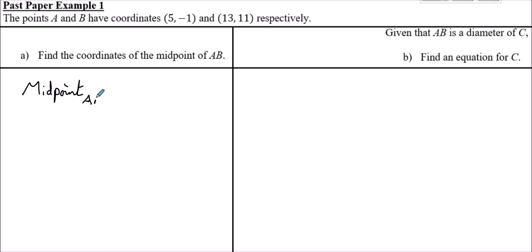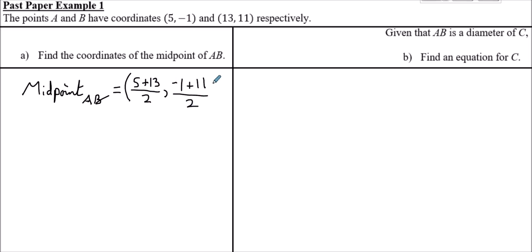The midpoint of A and B: average the x-coordinates: (5 + 13) / 2 = 18 / 2 = 9. Average the y-coordinates: (-1 + 11) / 2 = 10 / 2 = 5. So the midpoint of AB is (9, 5).